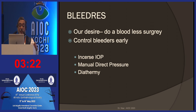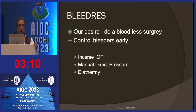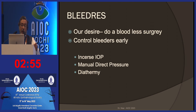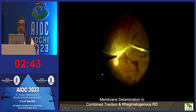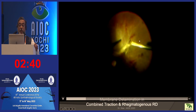For a small bleeder, you can raise the IOP for a few minutes to see if it stops. If not, use direct manual pressure with the cutter tip or a blunt instrument held to the bleeding point for about a minute — most often the bleeding coagulates and stops. Diathermy is the last resort and must be used very carefully as it can injure the retina.